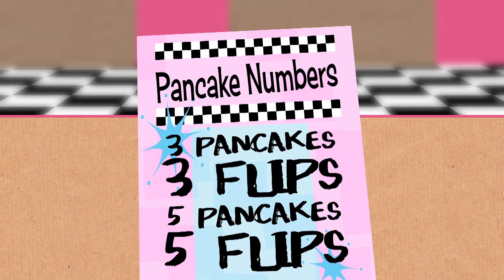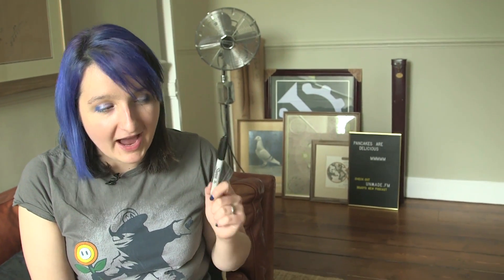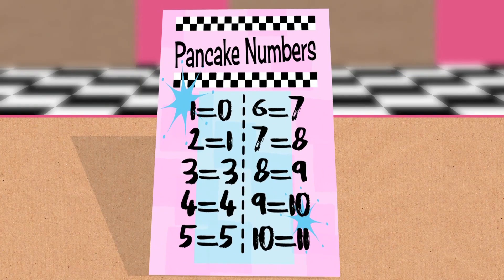I'm seeing a trend! It does look a little pattern-y: for three it's three, for four it's four, for five it's five. After that it starts to deviate — every so often it goes up by two instead of one. So it's not quite always just the number of pancakes, but people do try and calculate what the pancake number is for a given number of pancakes.